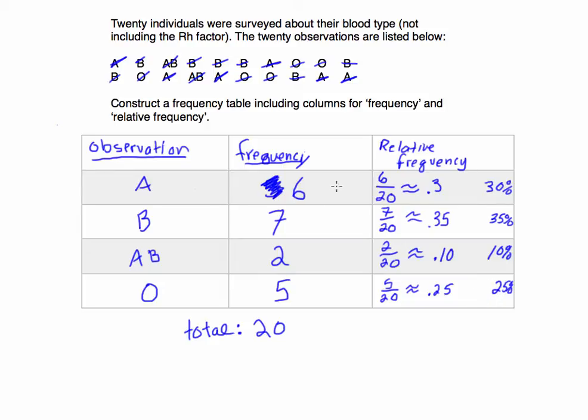Now, a good check. You should be able to add up this column of relative frequencies and get one, because each individual value was separated into A, B, AB, and O. If we add this up, it should include all the values. So point three plus point three five is point six five, point six five plus point one is point seven five, and the sum will equal one. Or if we sum up all the percentages, we would get one hundred percent.